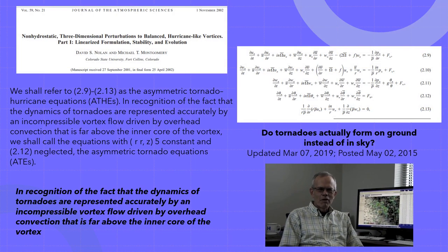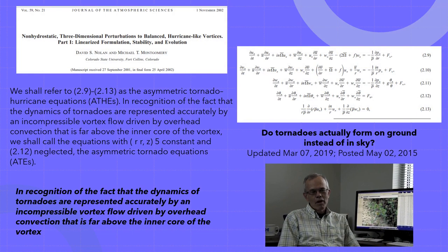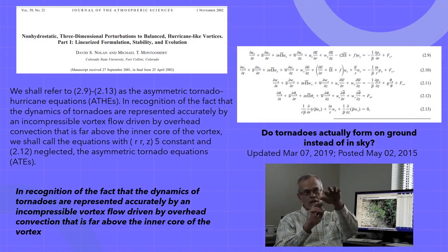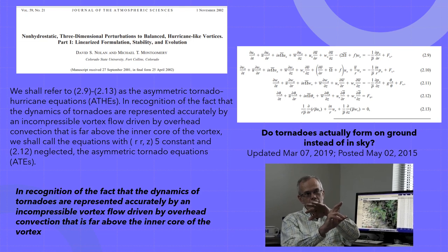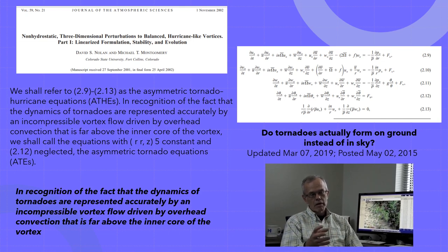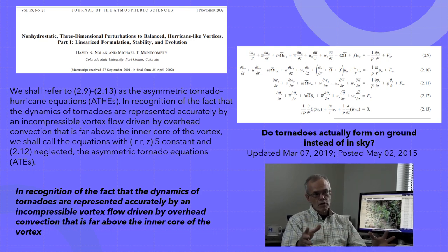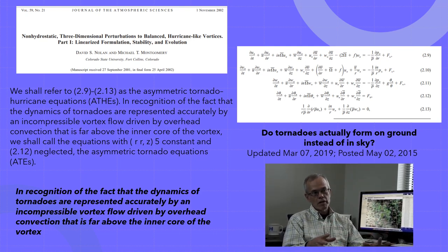Well, with tornado formation or tornado genesis, what we're finding and what other people are finding is that you might have a rotational lock, but it's a rather weak rotation. The characteristics of the surface are the important elements that trigger tornado genesis. That could be topography, that could be variations in surface roughness, or it could just be surface roughness itself.